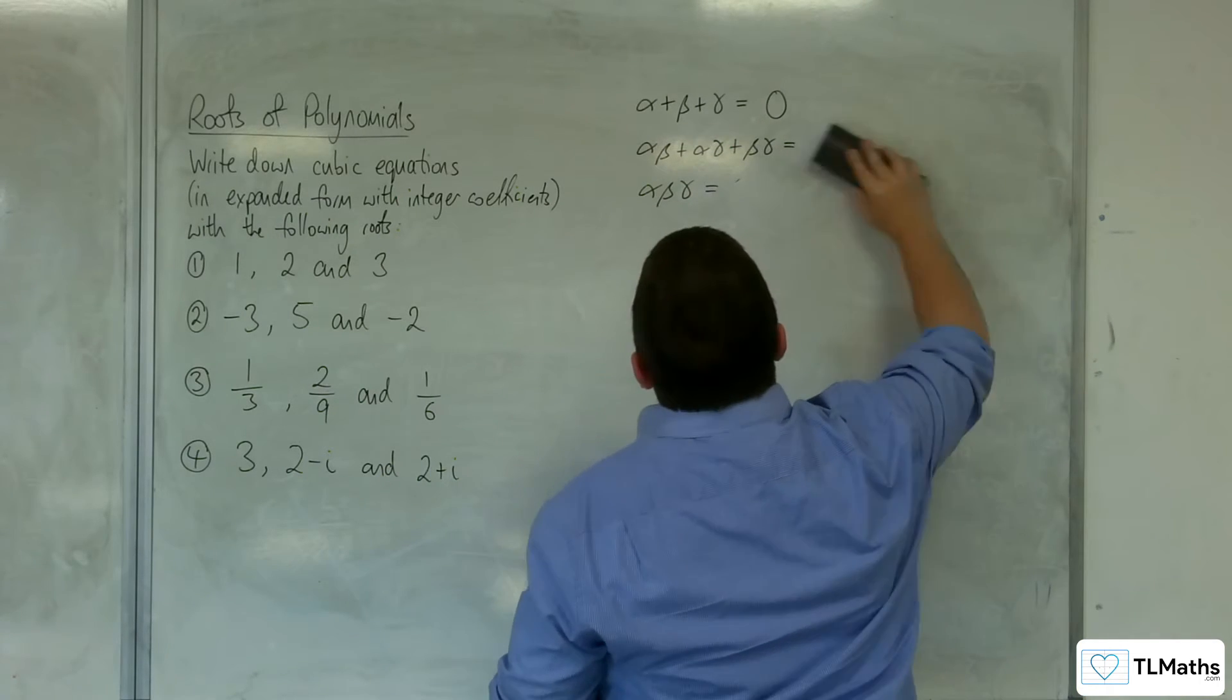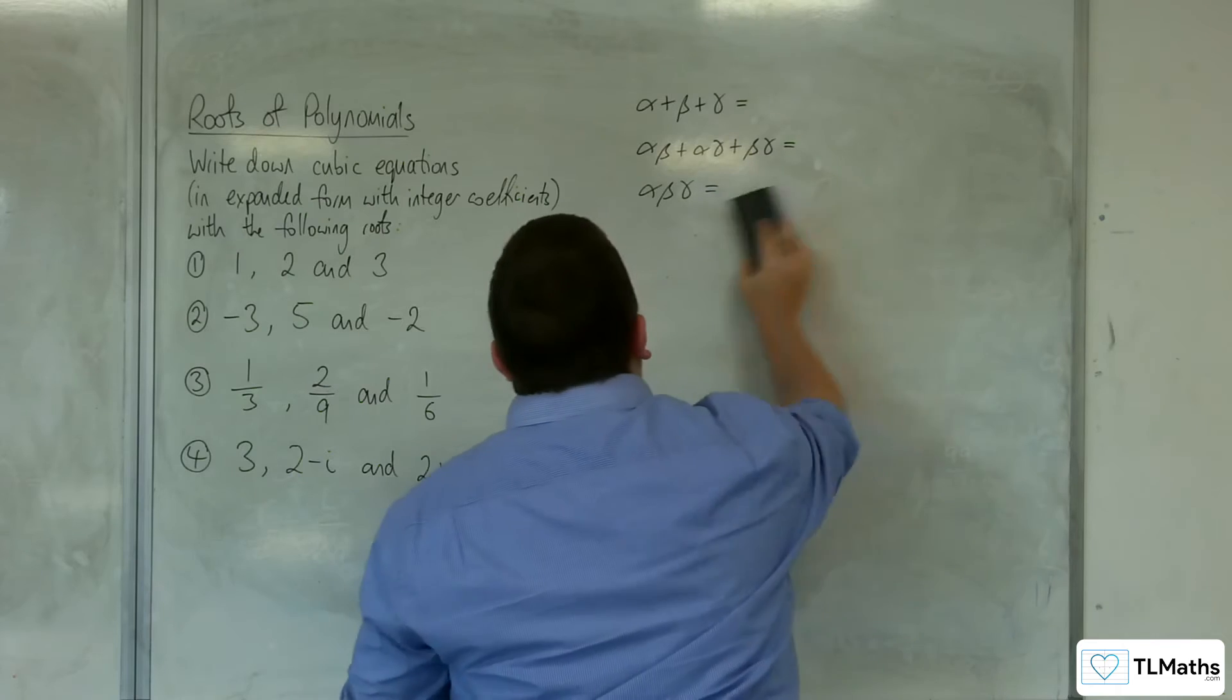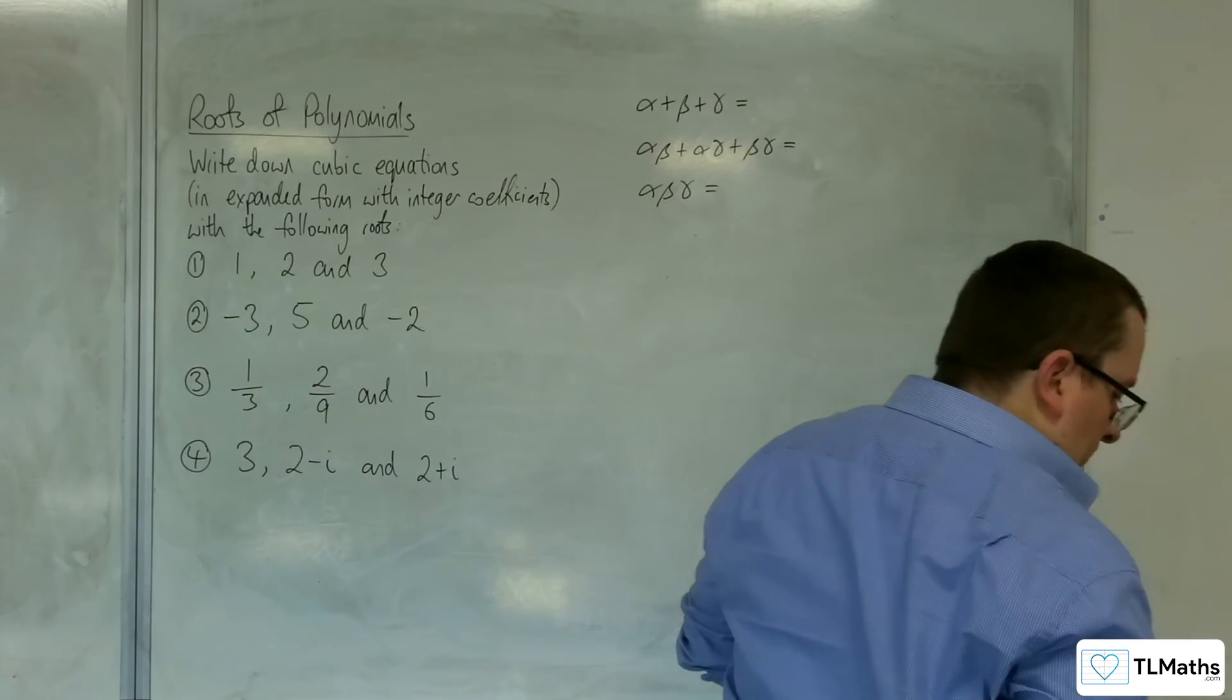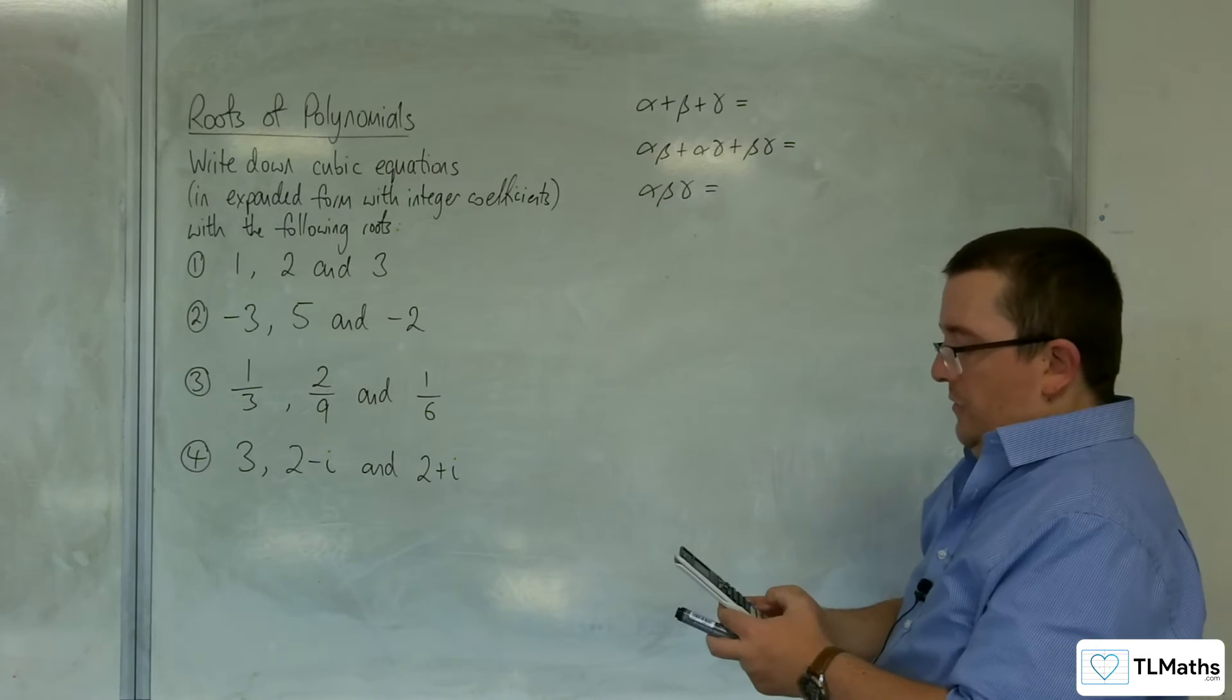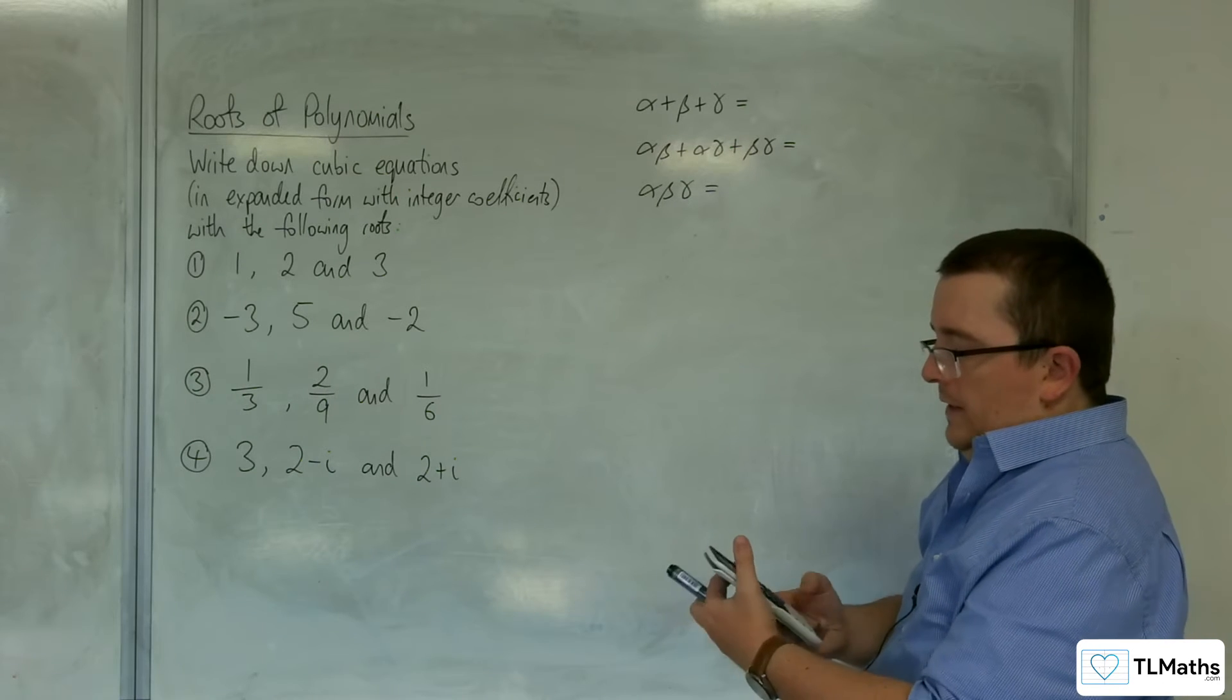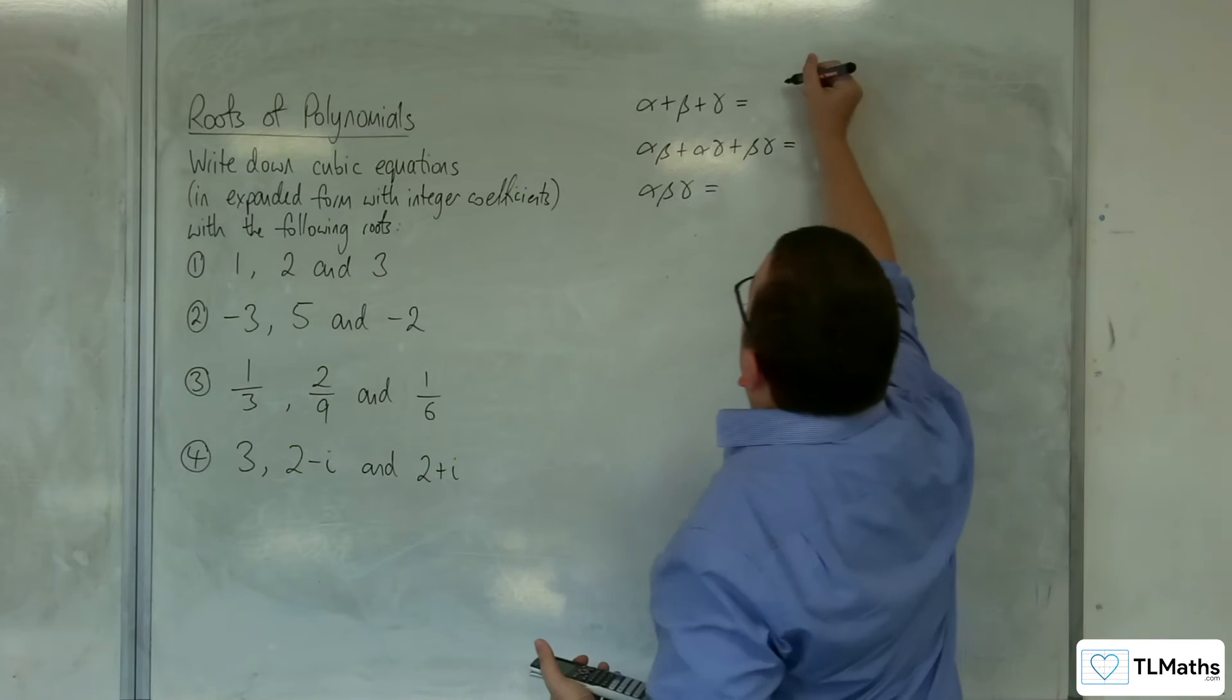Right, so let's take a look at the next one, so number 3. So first of all, we've got the sum of the roots, so we've got 1/3 plus 2/9 plus 1/6, and that gets us 13/18.